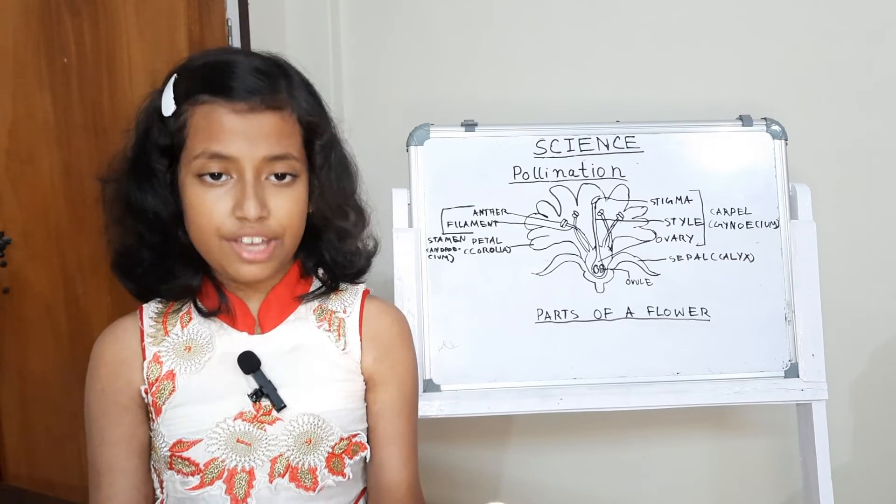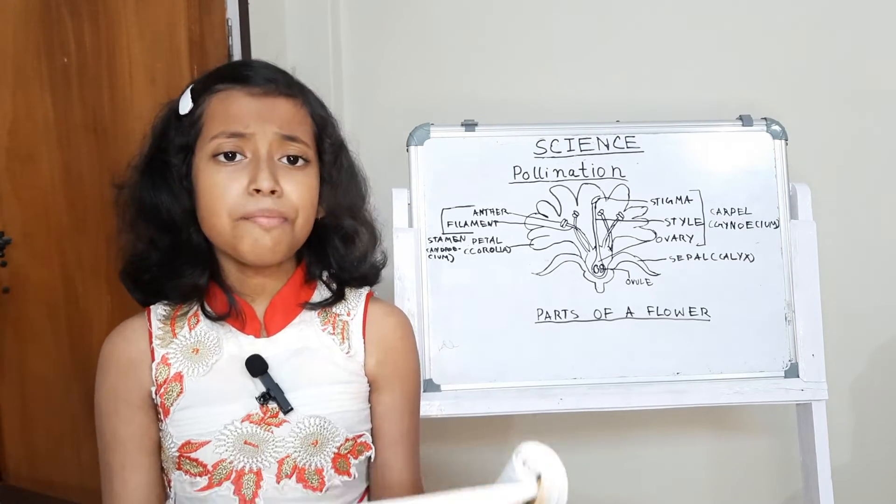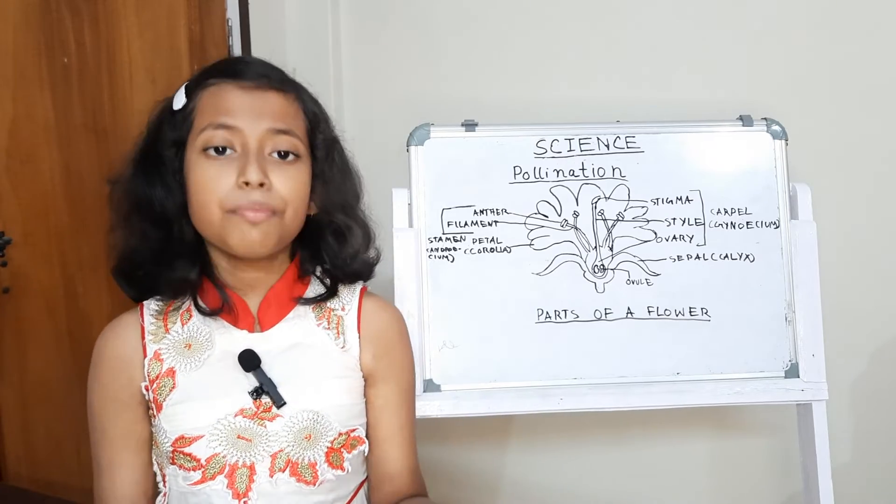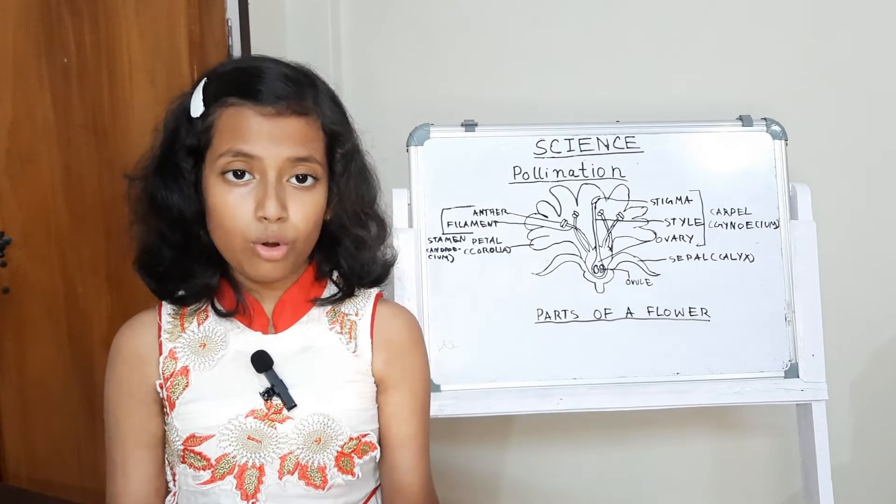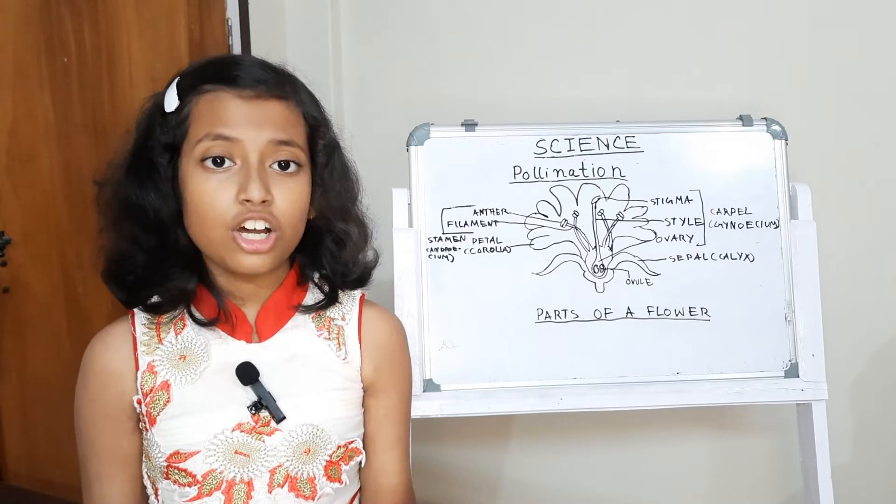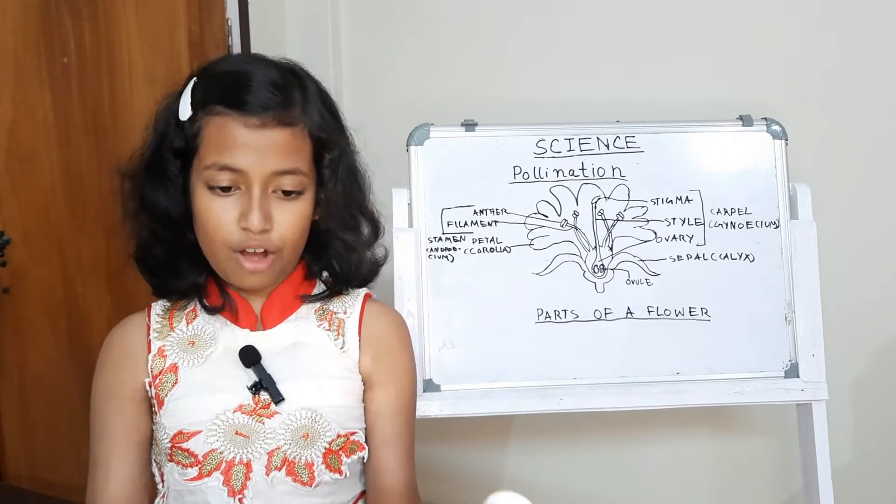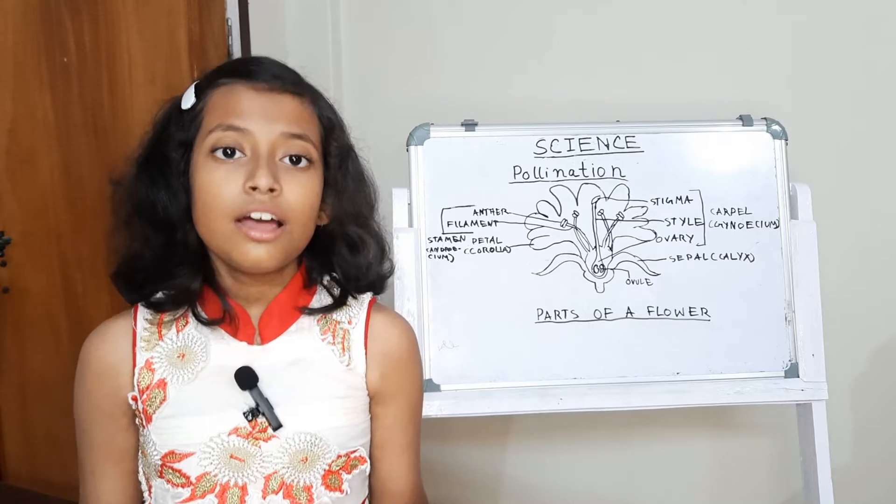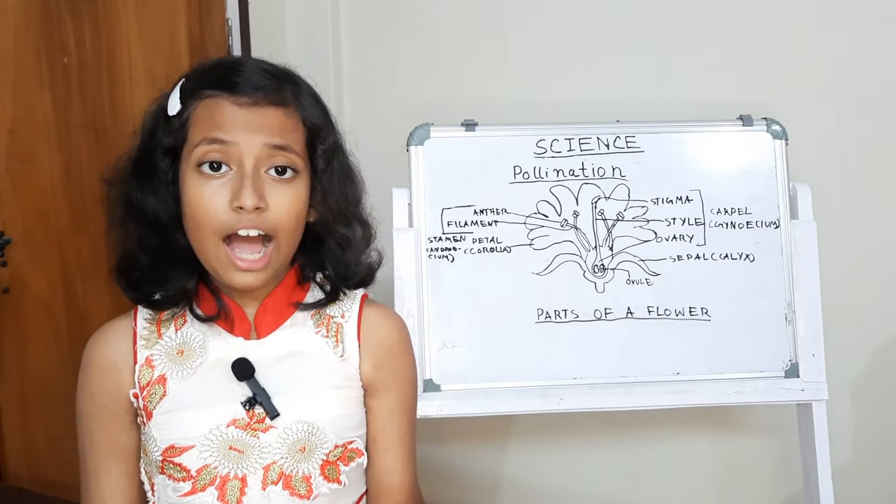Monosexual flowers. Some flowers may have either male reproductive part or female reproductive part but not both. Such flowers are called monosexual flowers, also called unisexual or incomplete flowers. Examples: watermelon, papaya and pumpkin.